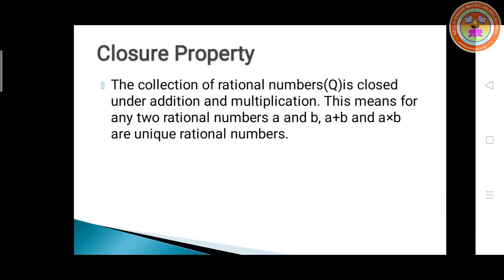The first property is closure property. The collection of rational numbers Q is closed under addition and multiplication. This means for any two rational numbers A and B, A plus B and A into B are unique rational numbers. This is the definition for closure property. Now we will move on to the next property.